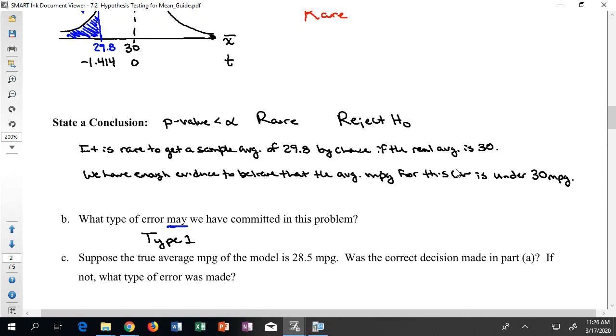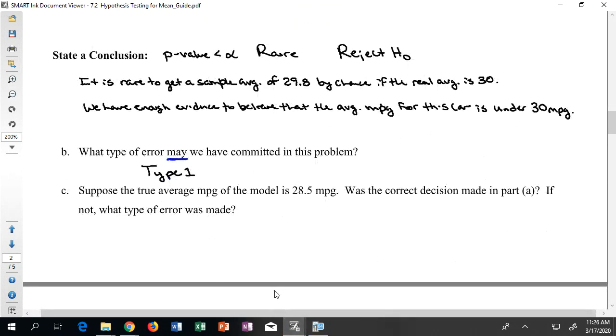And that's kind of what part C is. Suppose that someone comes up to you and they say, I tested all the cars for this particular model, and they found that the true average, the mu that we were chasing is actually 28.5. Did we make the right decision back in part A then?